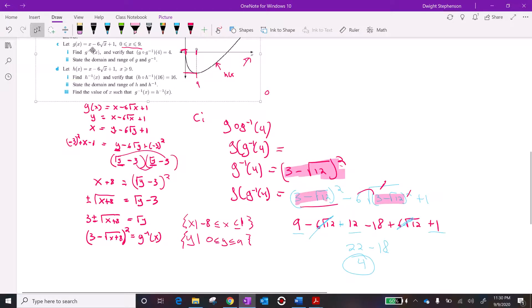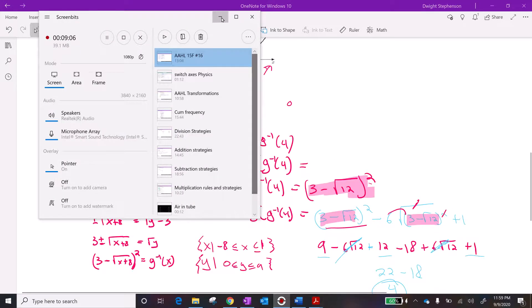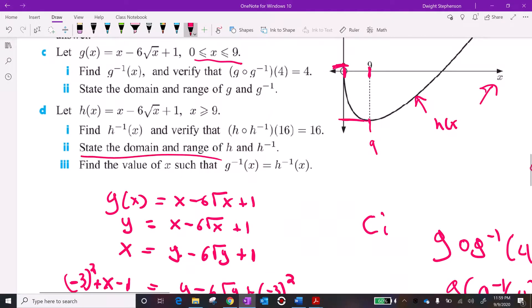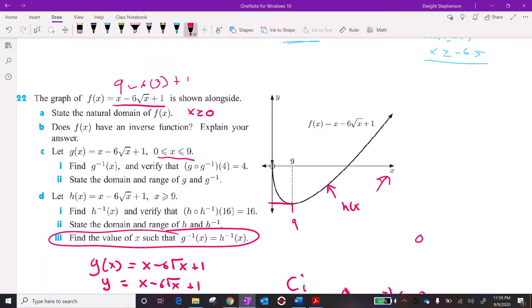And then part d is going to be very similar. I promised you I'd show you a different way to try to find this function. I think the easiest way to solve that one is with a graph. We know that the inverse functions are going to be reflections over the line y equals x. So this graph, like this y-intercept of (0, 1) is going to turn into (1, 0). This (9, negative 8) is going to turn into (negative 8, 9), which is up here somewhere. And then your graph is going to look something like this. And then this x-intercept that's over here turns into a y-intercept up here. So your graph looks something like that.